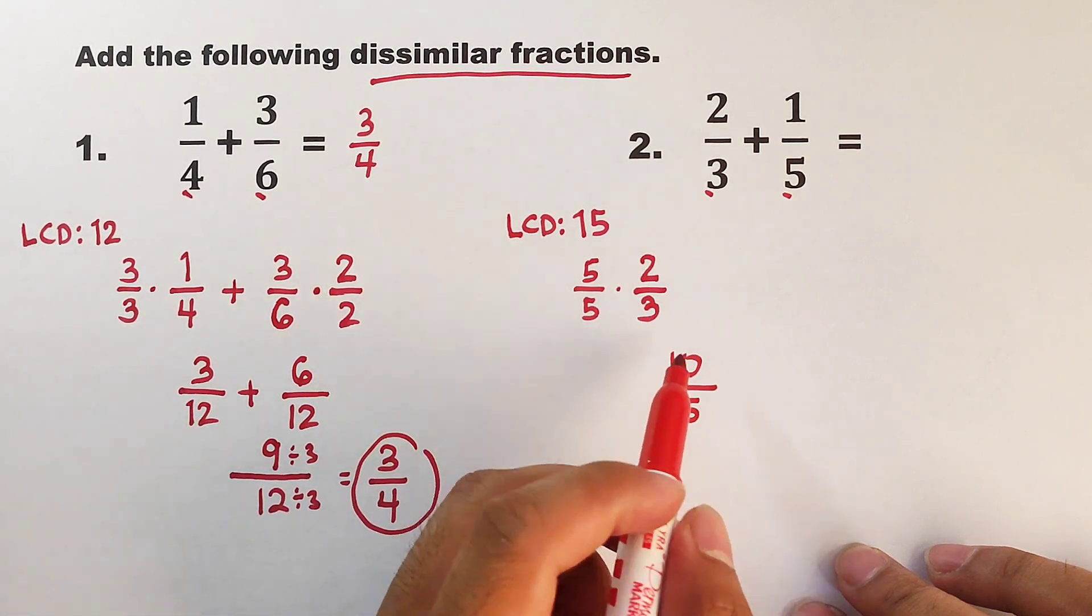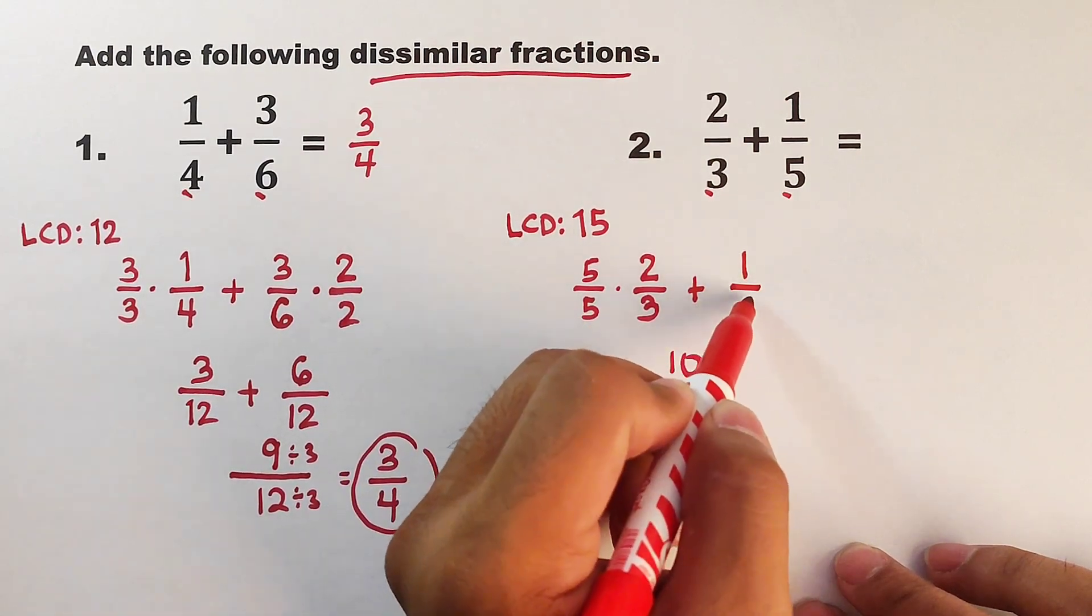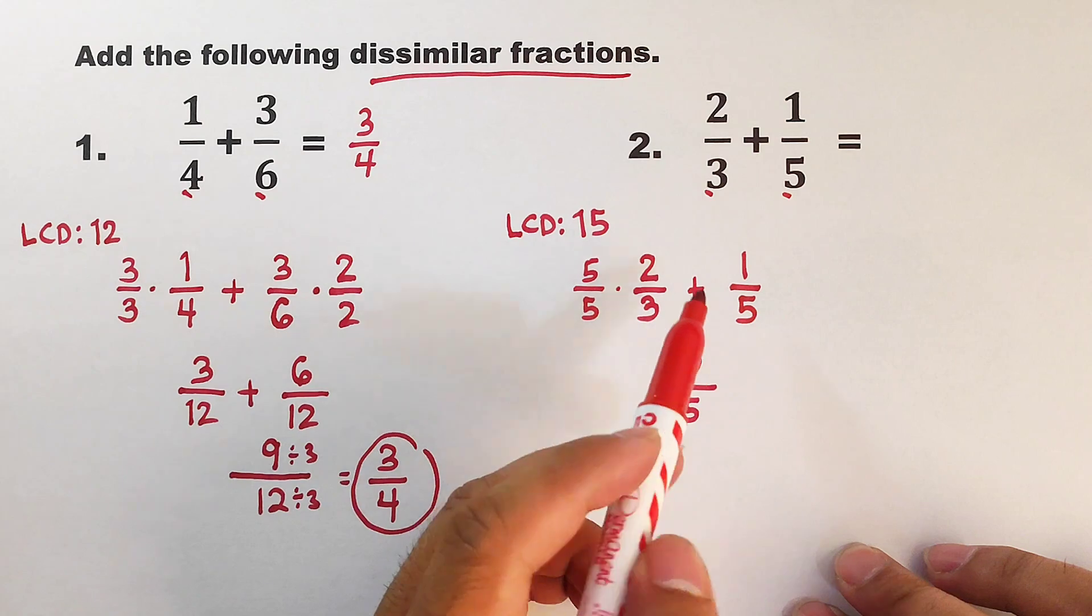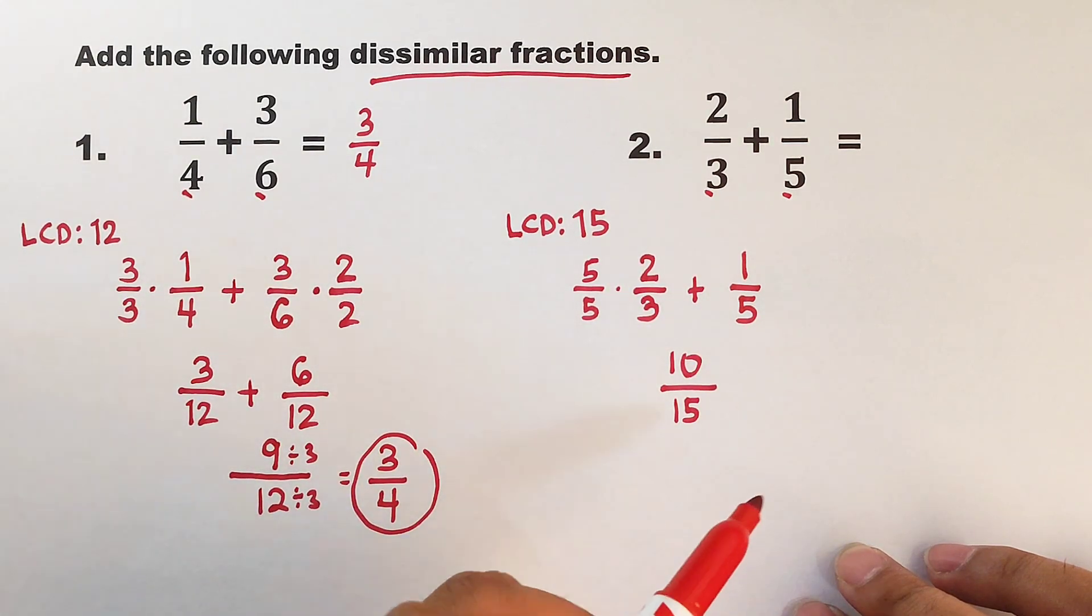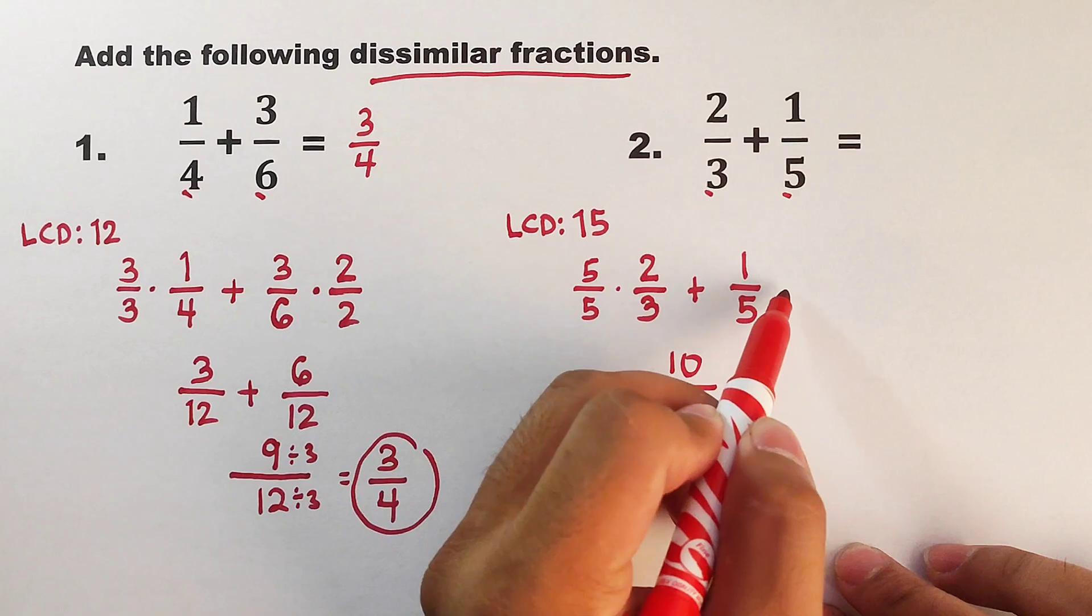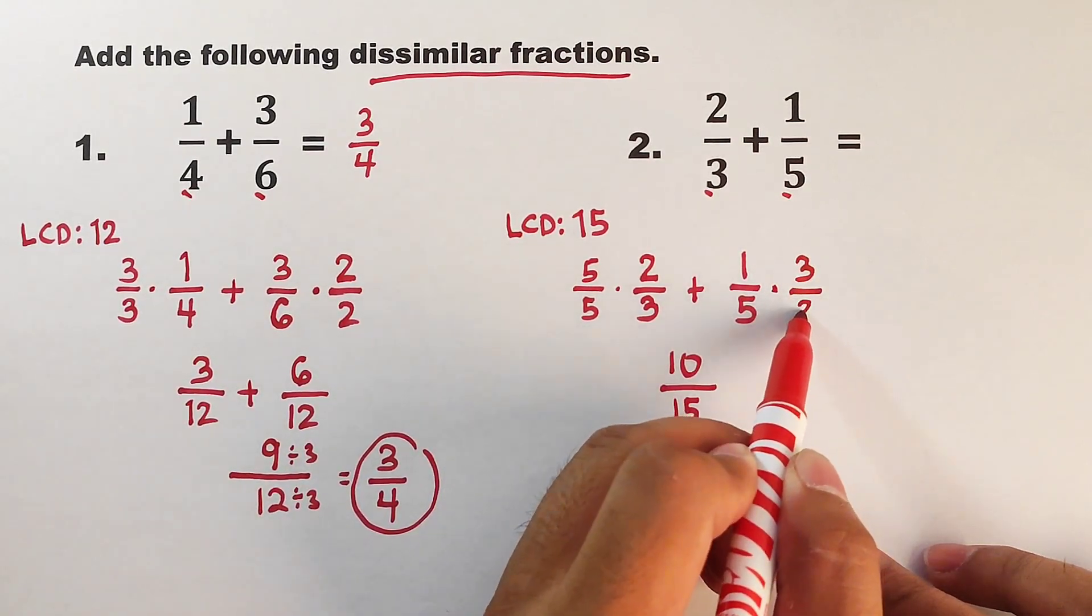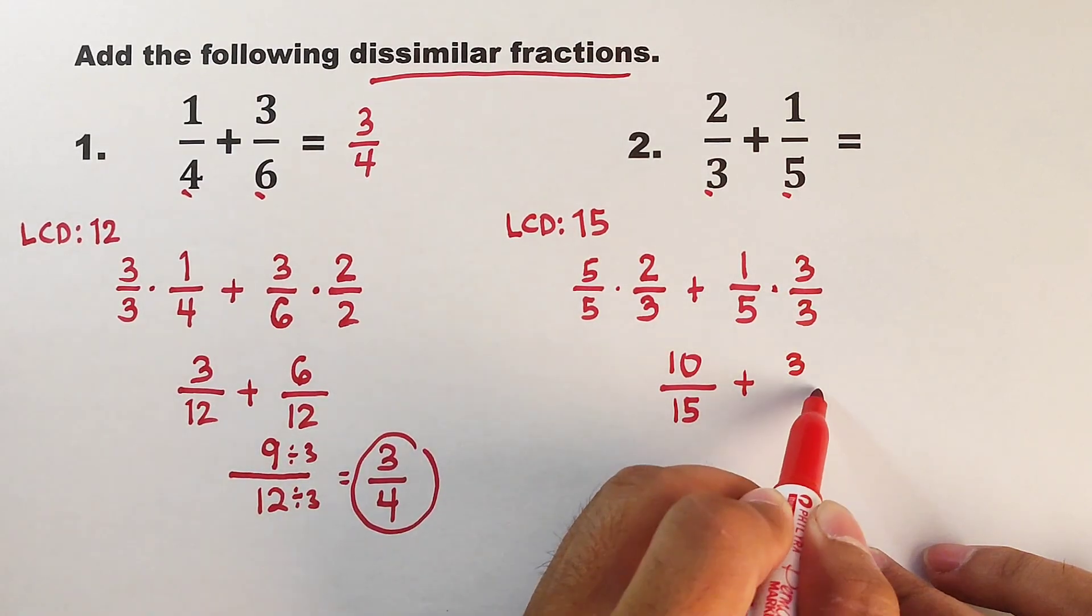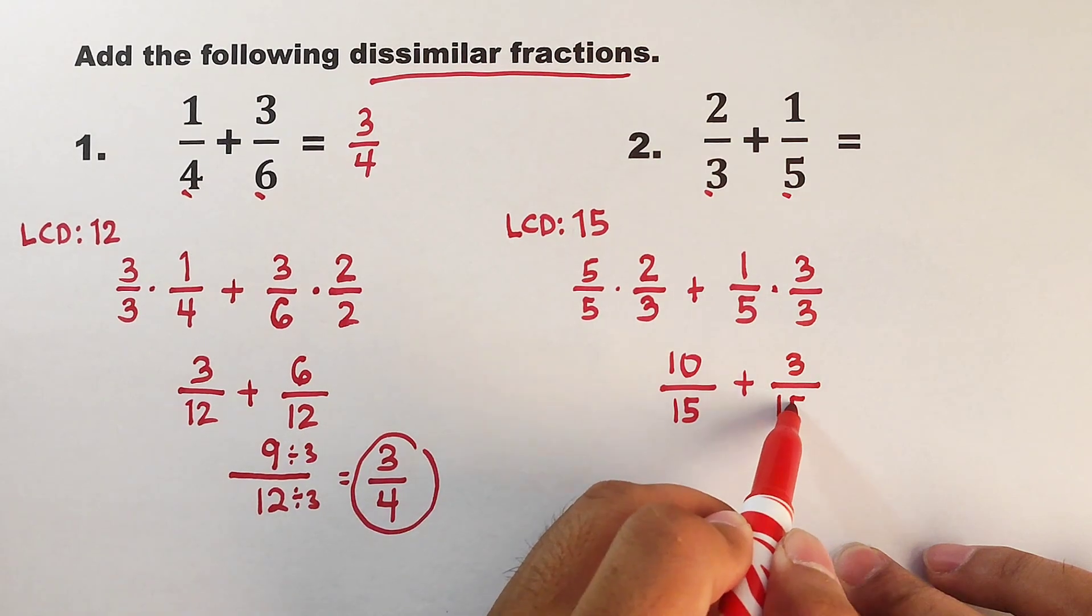And for this part, plus 1 over 5, what must be the number that we need to multiply to 5 to make it 15? Okay, very good. The answer is 3. So you will multiply this by 3 over 3. 1 times 3 is equal to 3 over 5 times 3. That would be 15.